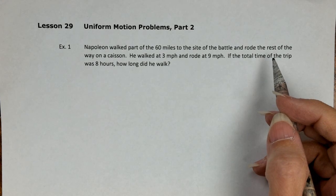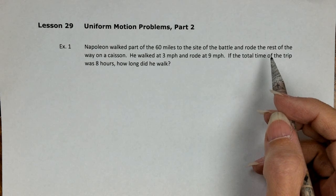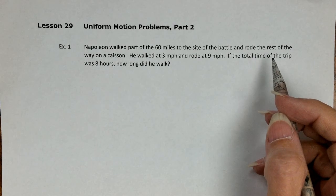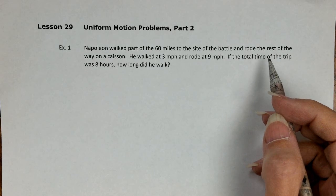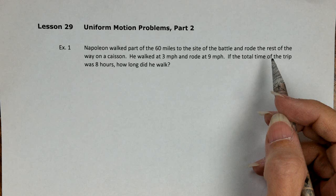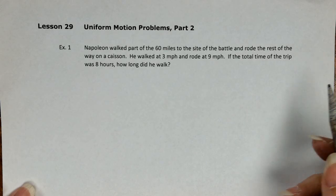Algebra 2 Lesson 29 is the second part about uniform motion problems, the distance rate and time, and all we have for our notes is two examples. They're much the same as before, just with a new little twist. So take a look at Example 1.